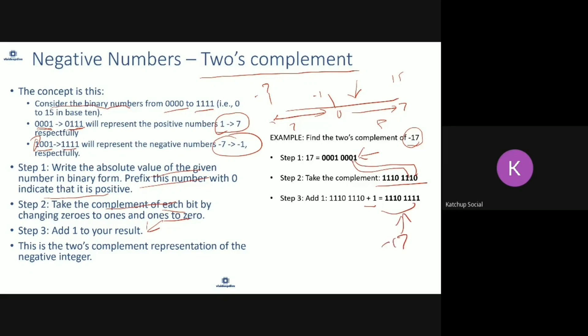This is how negative numbers are generally represented in hardware, and Verilog uses the same approach. It is a basic concept you may have covered in college — I wanted to recap it before introducing negative numbers in Verilog. In Verilog, negative numbers are represented using two's complement.